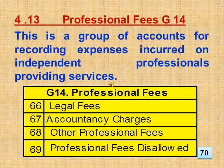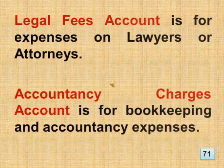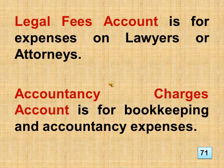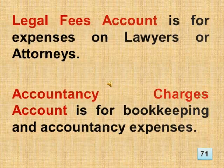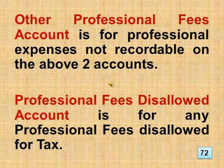Section 4.13 Professional Fees, Group 14. This is a group of accounts for recording expenses incurred on independent professionals providing services. This includes legal fees, accountancy charges, other professional fees, plus professional fees disallowed. Legal fees account covers expenses on lawyers or attorneys. Accountancy charges account covers bookkeeping and accountancy expenses. Other professional fees account covers professional expenses not recordable on the above two accounts. Professional fees disallowed account covers any professional fees disallowed for tax.